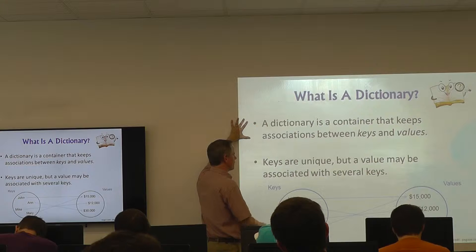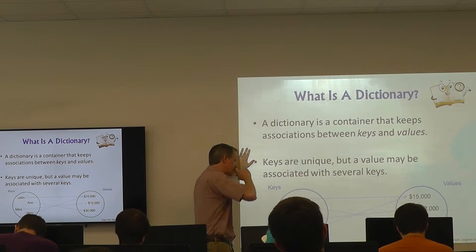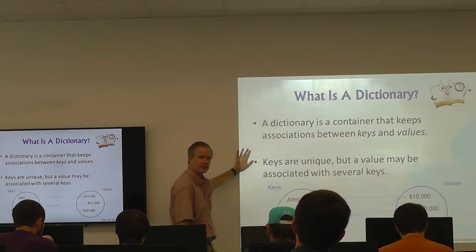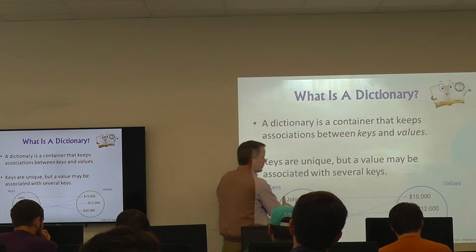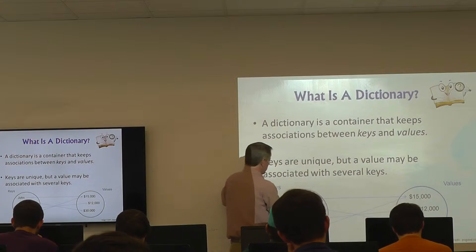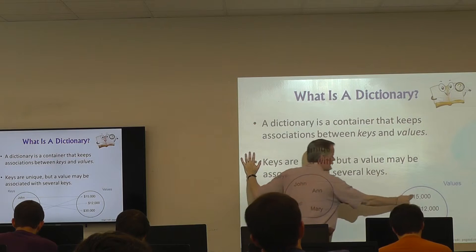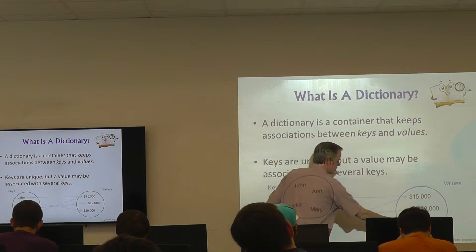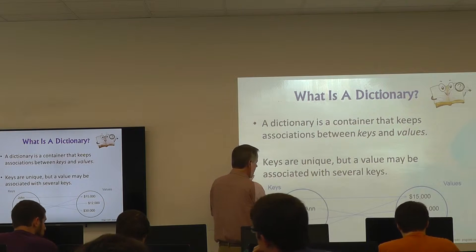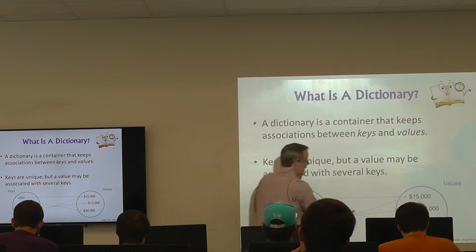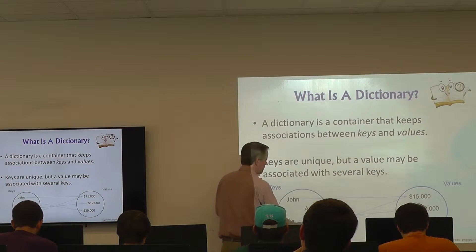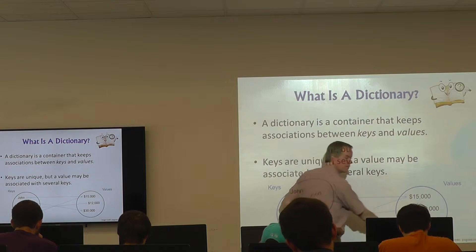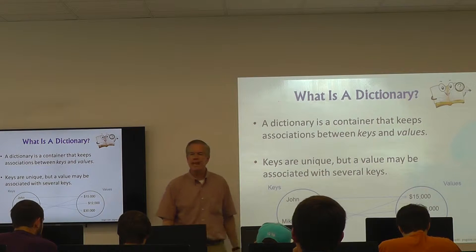Keys and values. Keys are unique but a value may be associated with several keys. John, Ann, Mike, and Mary all have salaries. John makes $15,000 — John is a key, $15,000 is a value. Ann makes $30,000 — Ann is a key, $30,000 is a value. Mike is a key, Mike makes $12,000. Mary is another key and she makes $15,000. Values can be repeated, keys can't.